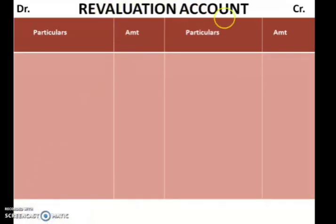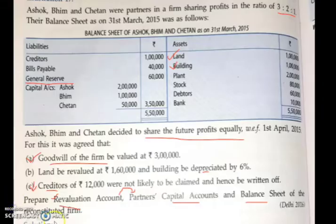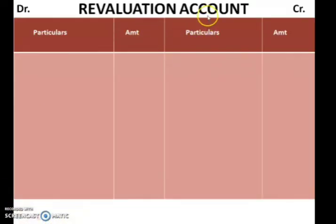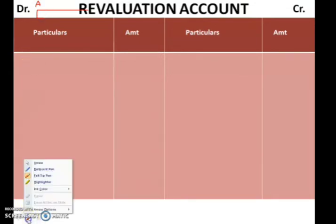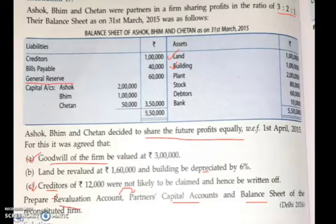This is the revaluation account — you know this is the debit side. Revaluation is the same as profit and loss account. On the debit side of the revaluation account, you are supposed to post all the items. Let us represent asset as 'A' and liability as 'L'. Moving back to the question, I can see here: land be revalued at Rs. 1,60,000.